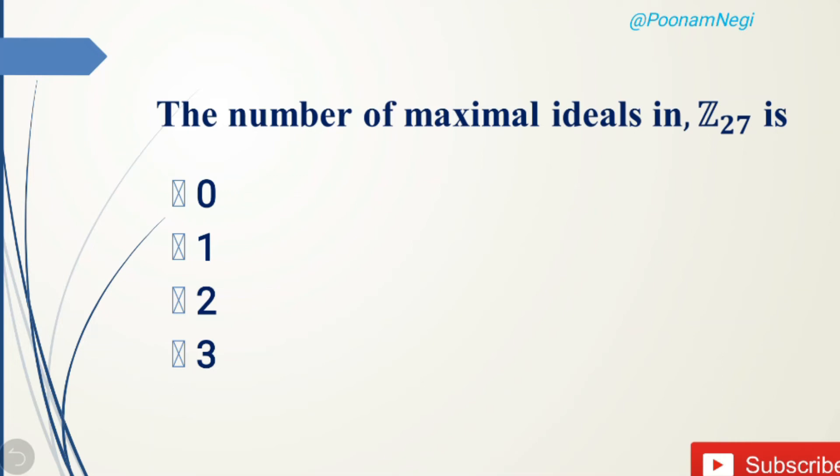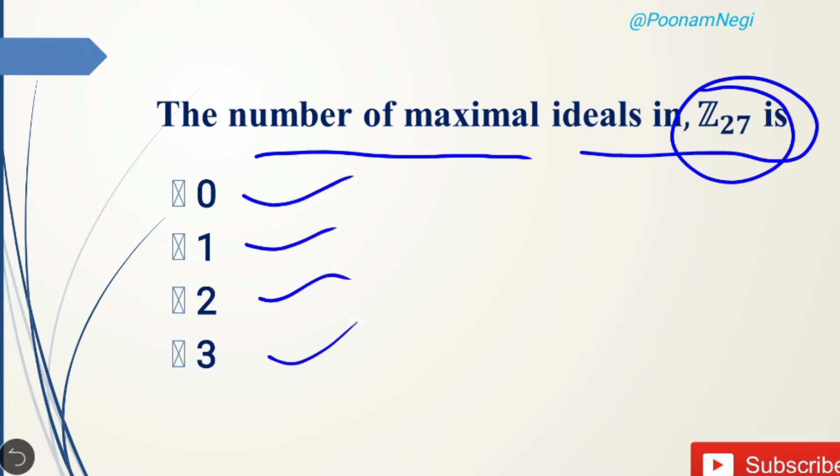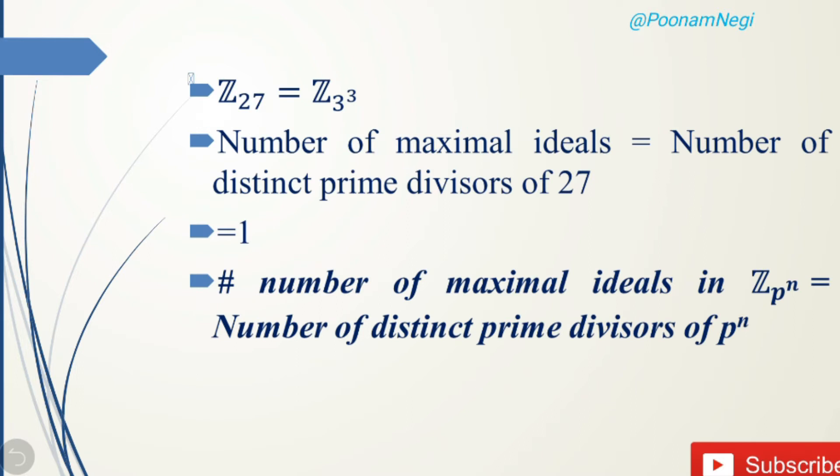Today's problem is to find the number of maximal ideals in Z_27. Options are 0, 1, 2, and 3. This is a simple question related to the topic of ideals and maximal ideals.